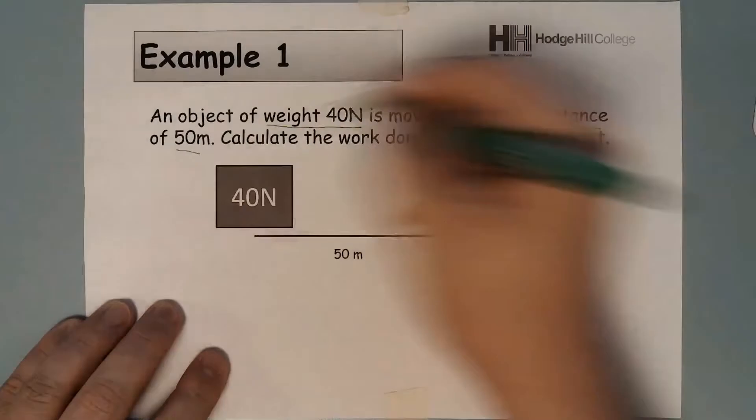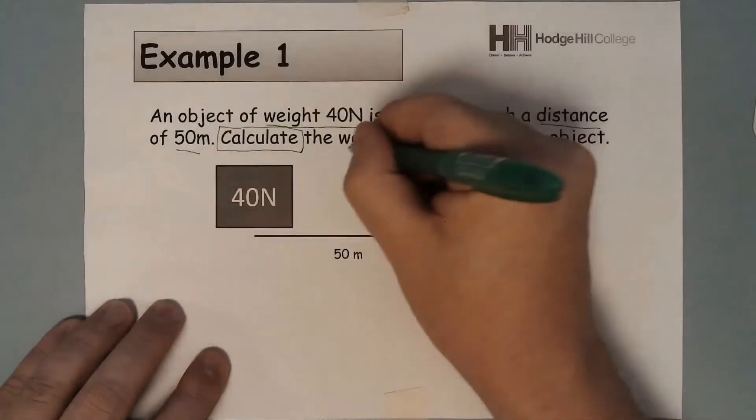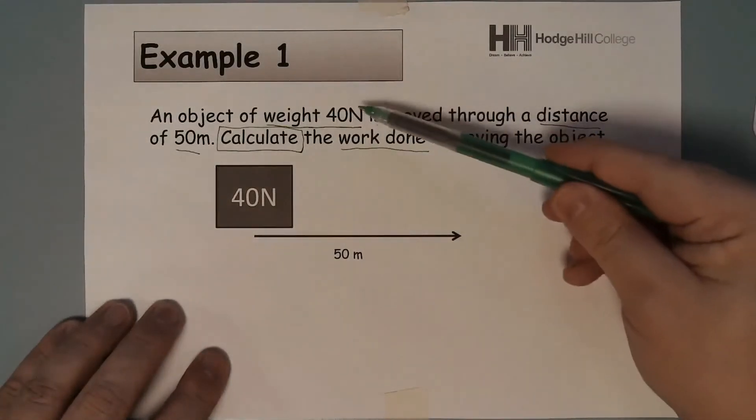So all I do is underline the information that I've got. I put a square around the command word calculate because it wants me to work something out, and it tells me it wants to work out the work done.